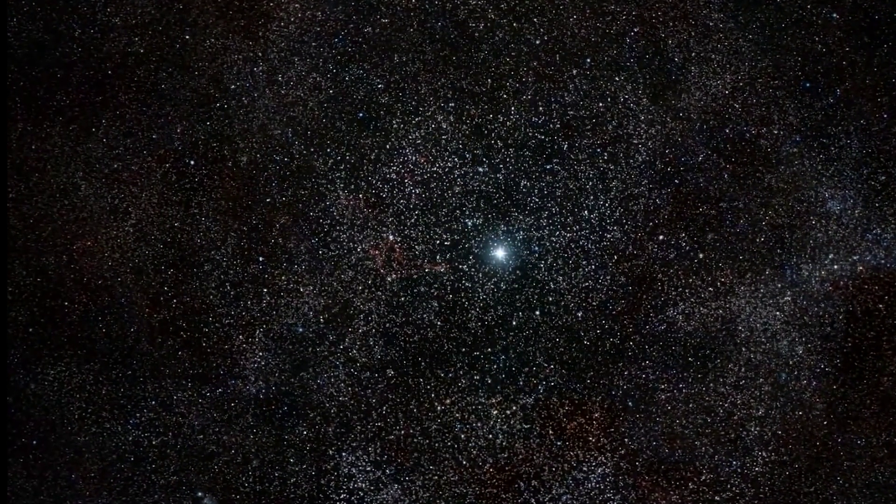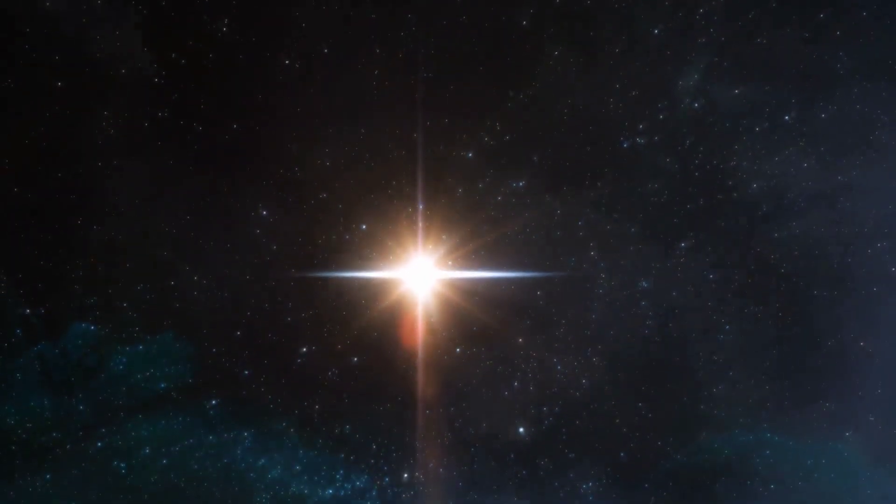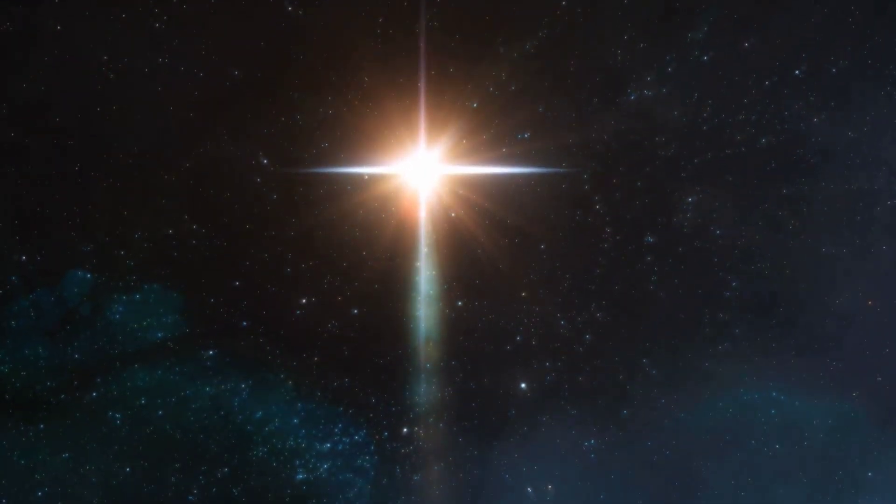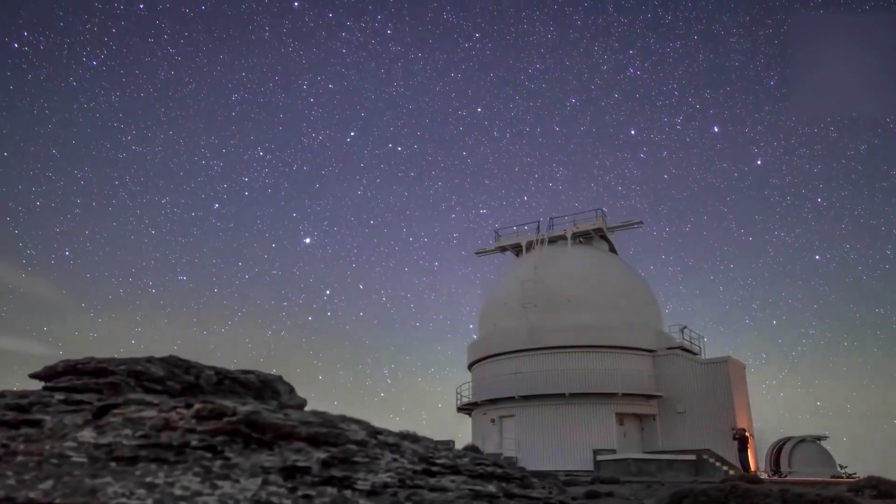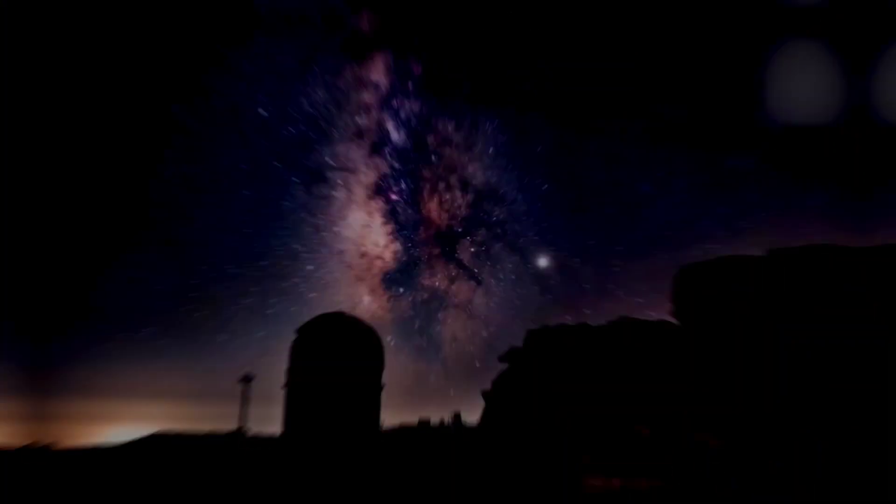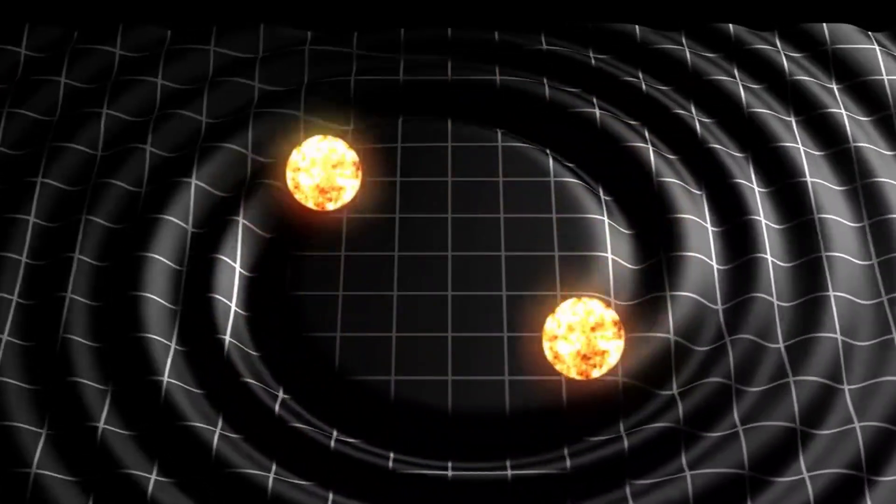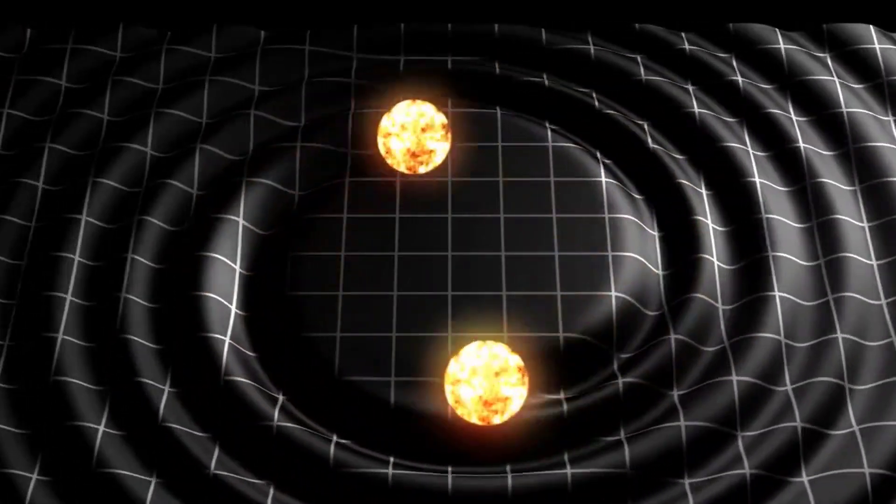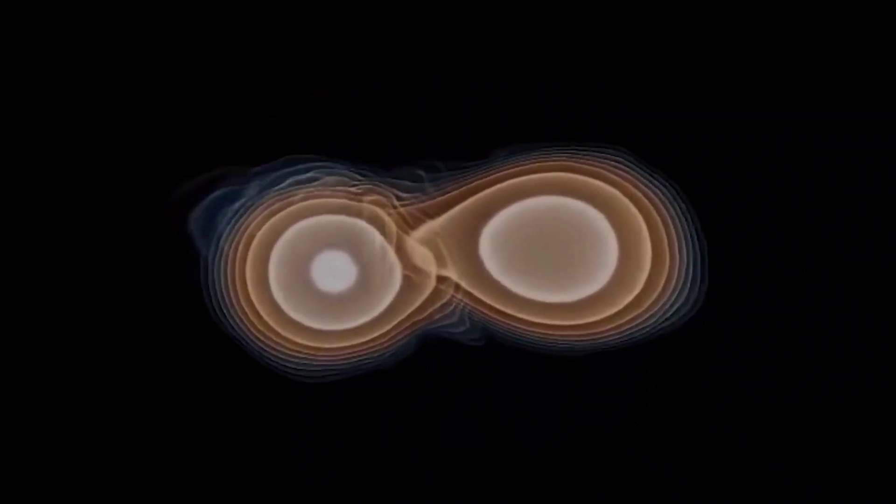This binary star system has been misclassified for years as a single variable brightness star. Astronomers have enough information about the two stars today. They believe that these two buddies are circling each other so closely that their atmospheres are virtually touching.